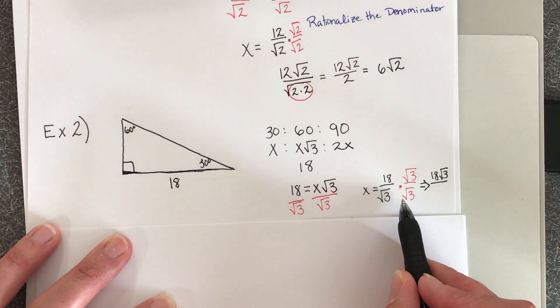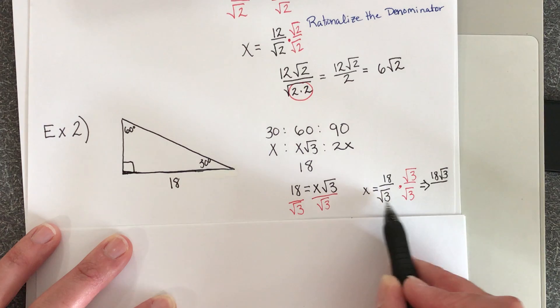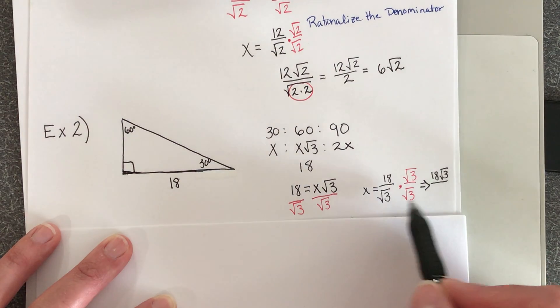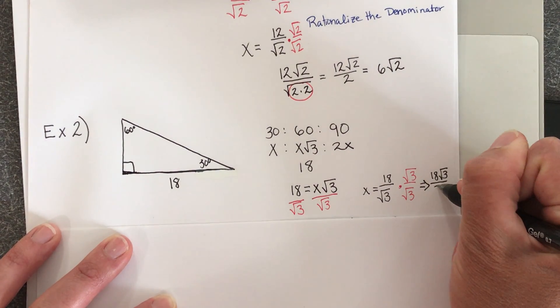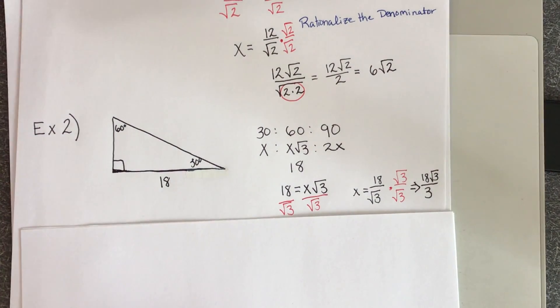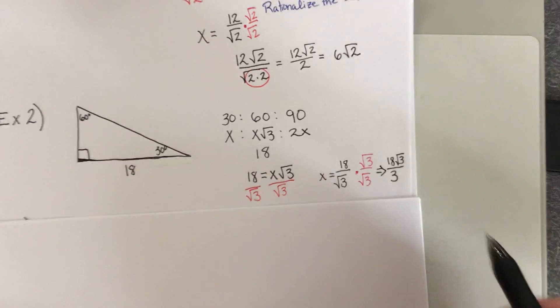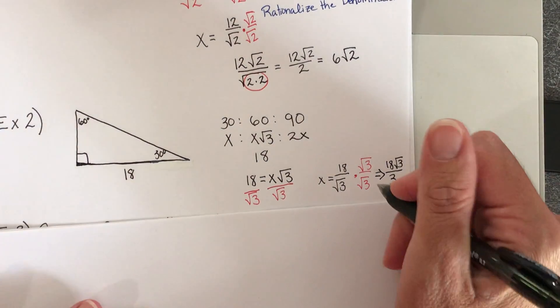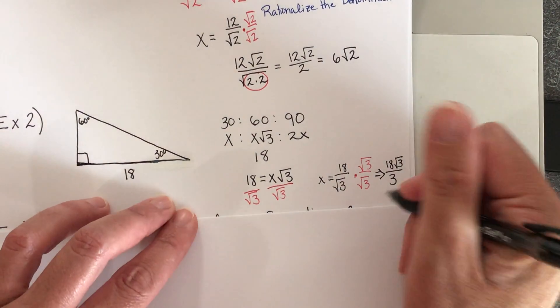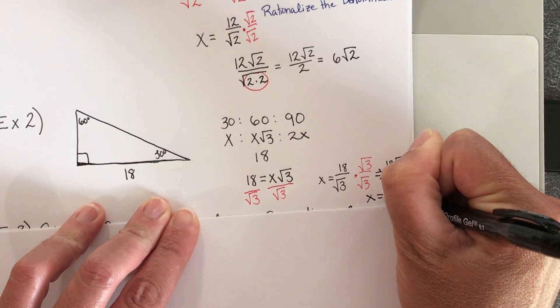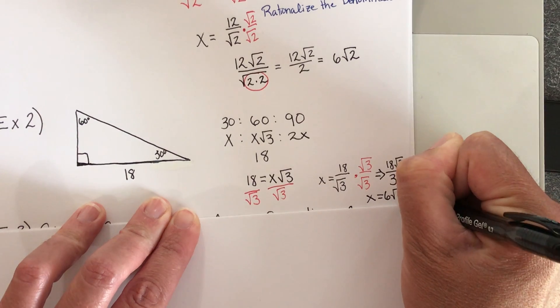When we multiply a radical by itself, the whole point is to get rid of the radical. To undo a square root, you square it. And that's basically what we're doing here. We're squaring this. So we've got 3 in the denominator. And we've got one more step to simplify. So what is 18 divided by 3? So 18 divided by 3 is 6. So x is equal to 6 times the square root of 3.